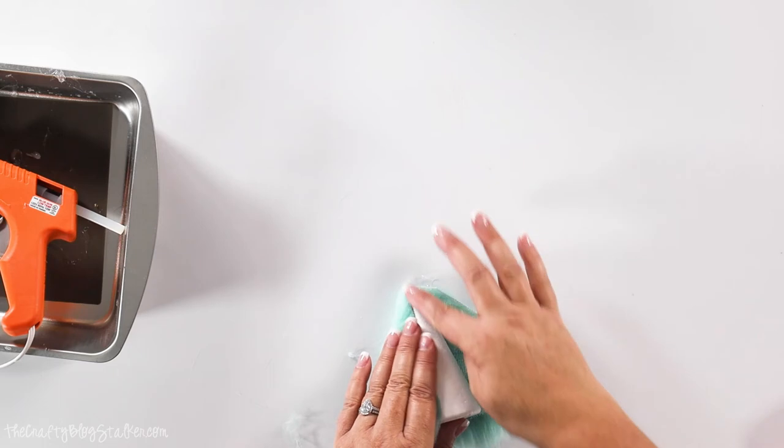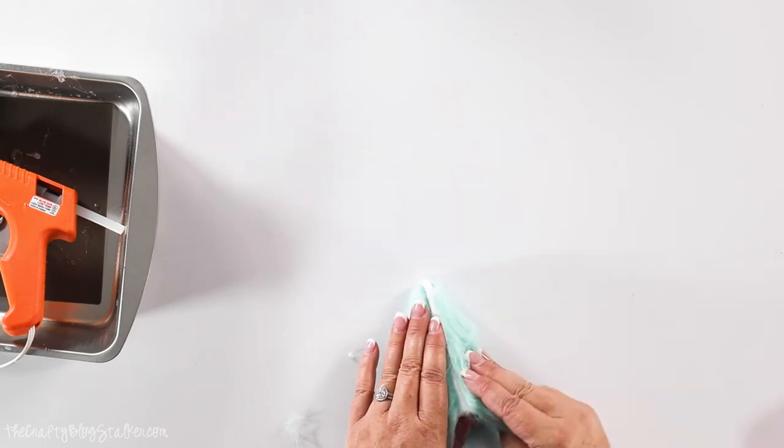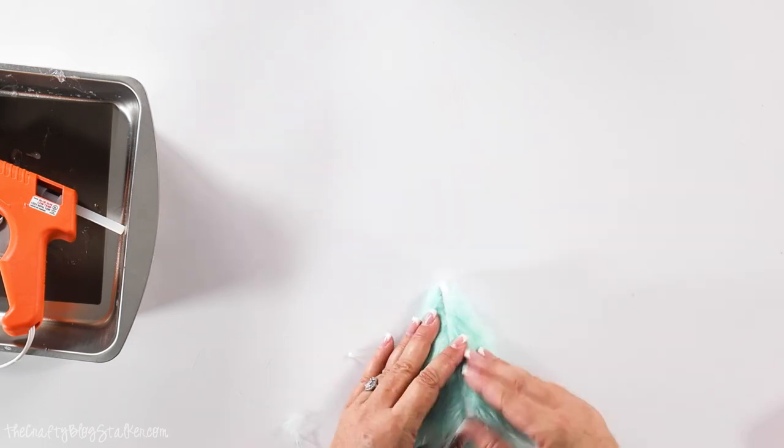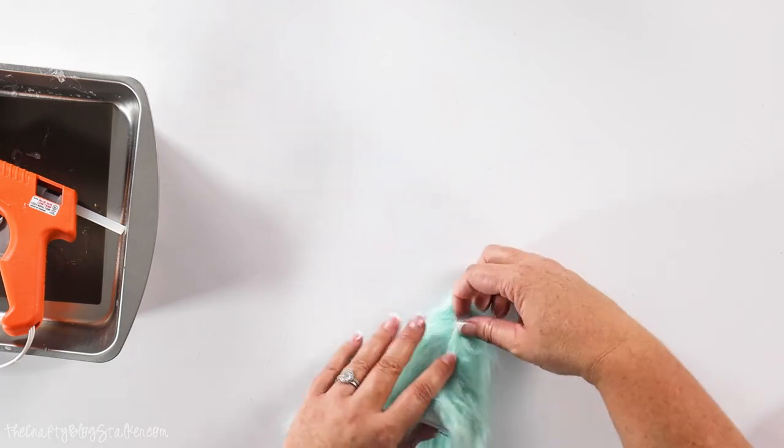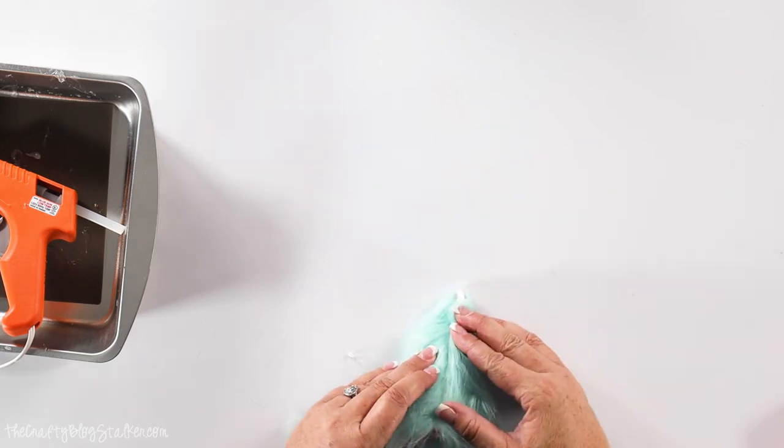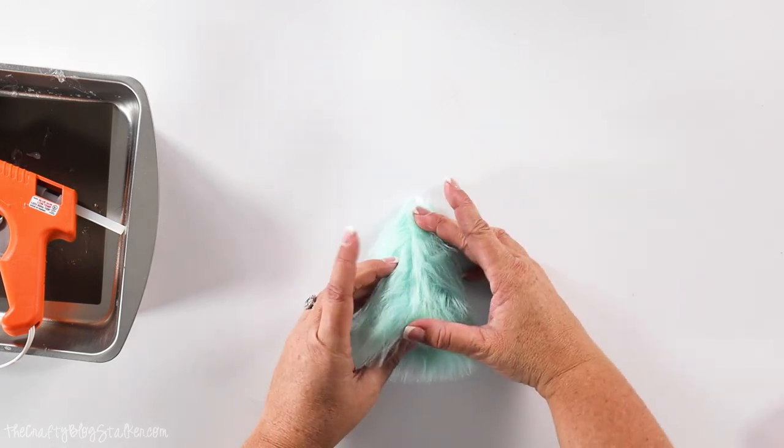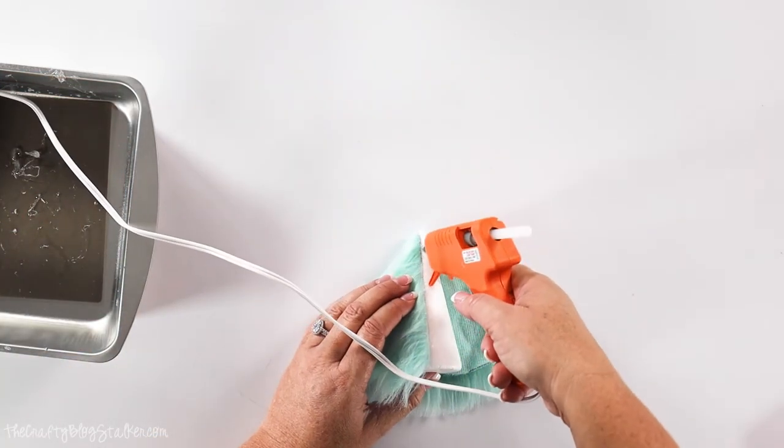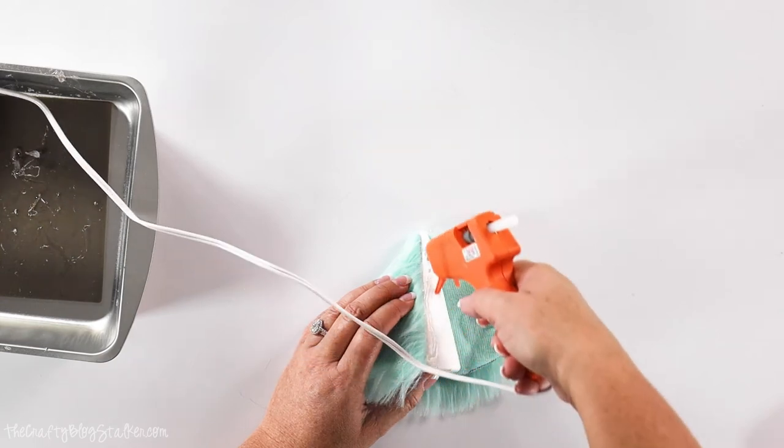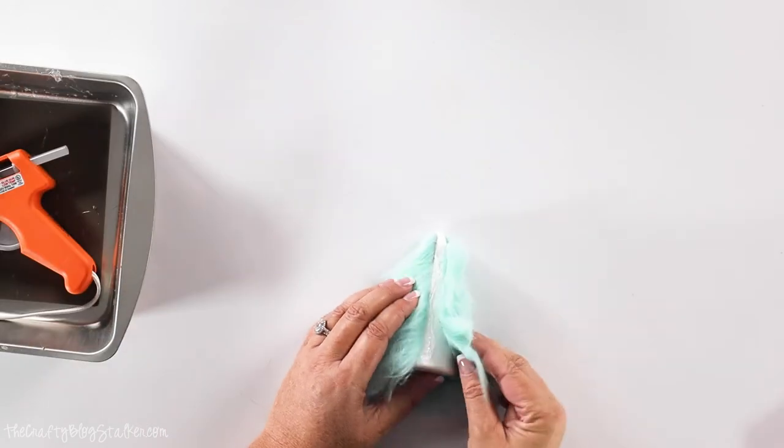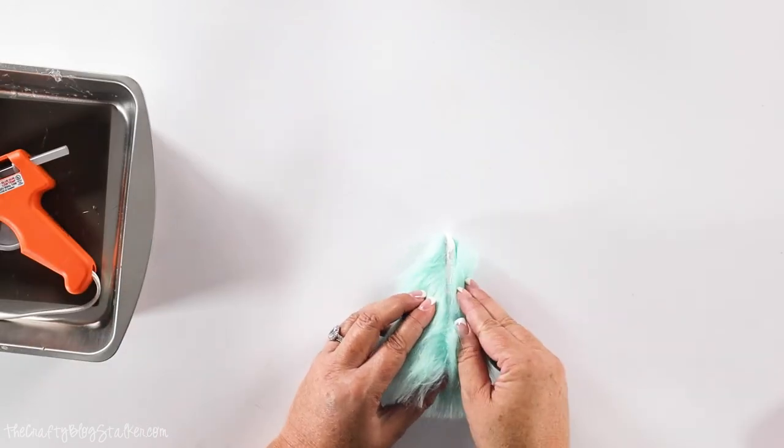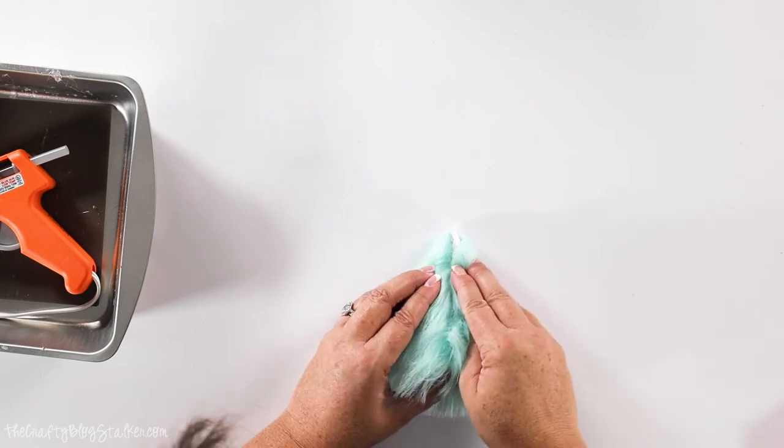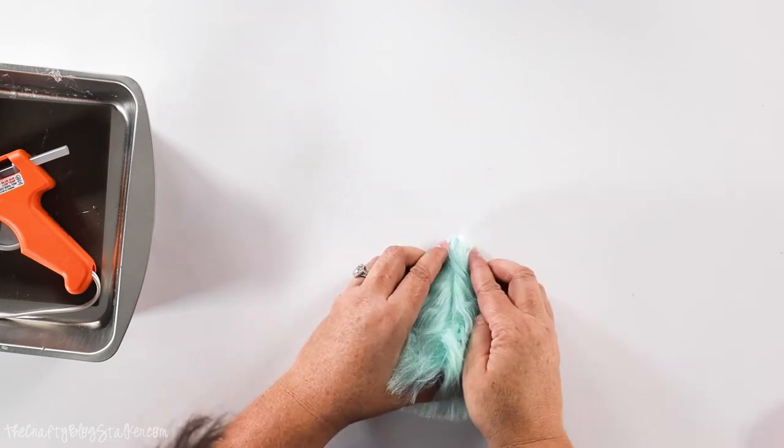Now we are to our meeting spot right there where the two ends of the faux fur will come together. I'm going to put some glue right under the styrofoam this time. And just meet those two ends together and press them into place.